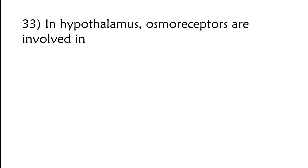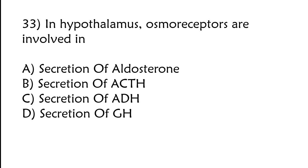In hypothalamus, osmoreceptors are involved in secretion of aldosterone, secretion of ACTH, secretion of ADH, or secretion of GH. The correct answer is option C, secretion of ADH.